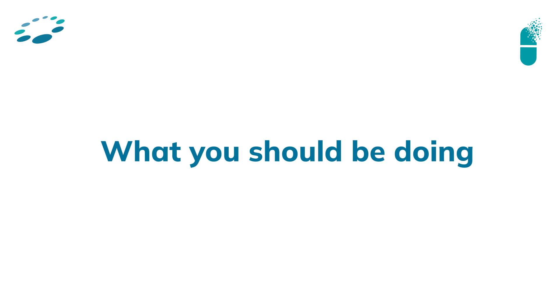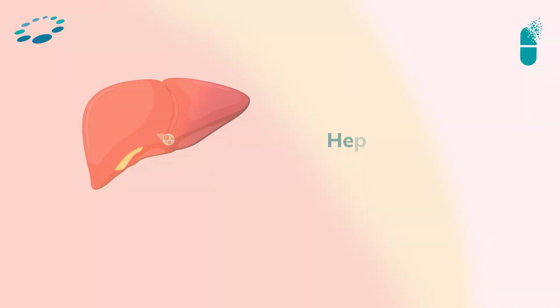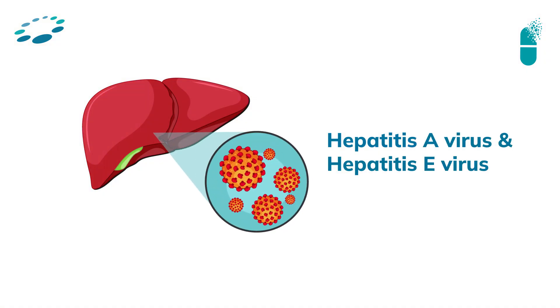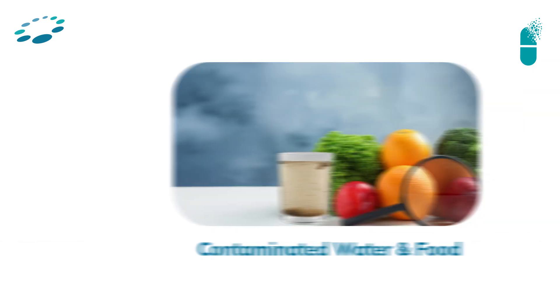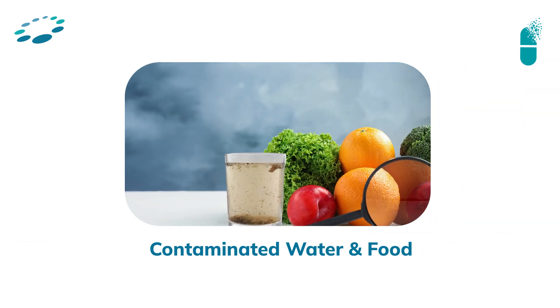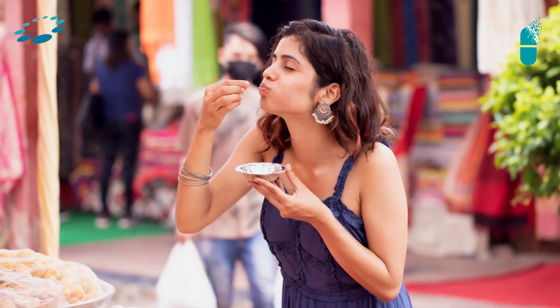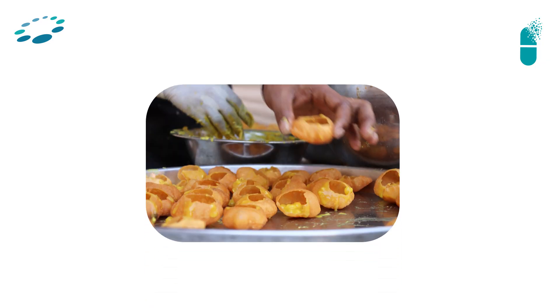So what should you know? Hepatitis A virus and hepatitis E virus spread because of contaminated water and contaminated food. Especially in this season, with cravings for pani puri — make sure you go to the right place, that the person who serves wears gloves, and that the water used is hygienic. Hepatitis A and hepatitis E are transferred through contaminated food or water taken from outside.